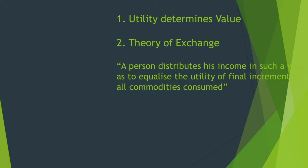According to Jevons, a person distributes his income in such a way as to equalize the utility of the final increment of all commodities consumed. This is his law of equi-marginal utility, or the equi-marginal principle. Jevons made it the philosophy behind exchange. To resolve the age-old diamond-water paradox, the concept of final degree of utility is used.